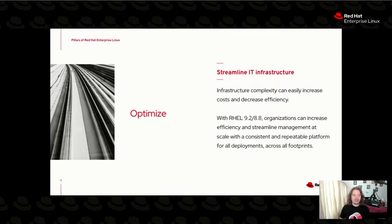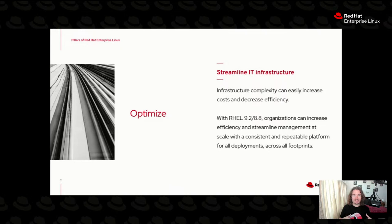The second pillar is optimization. You spend all this time innovating and developing your application, testing your workloads on a platform like RHEL. But what good is it if you can't optimize it or standardize your builds across your environment? System roles come into play here — the ability to scale your footprint in the public and private clouds, bare metal, virtual machines, and even out to the edge, deploying the same image with the same configuration just about anywhere.